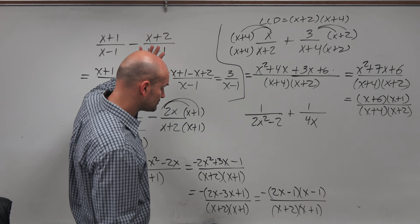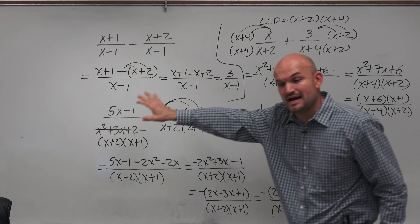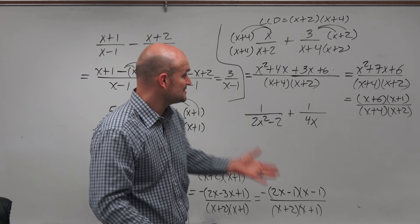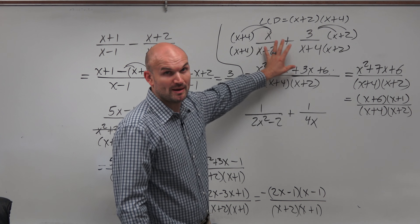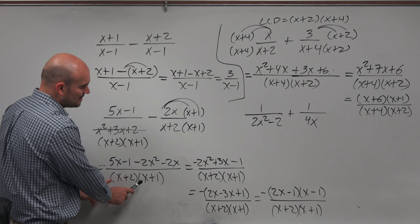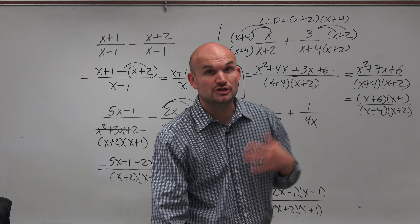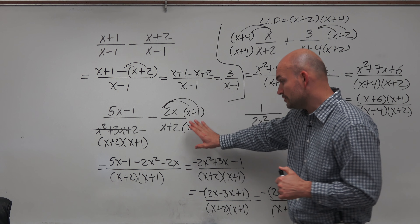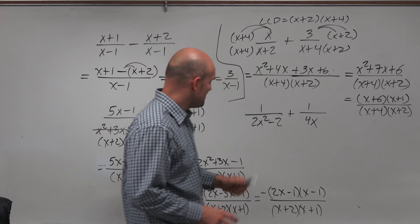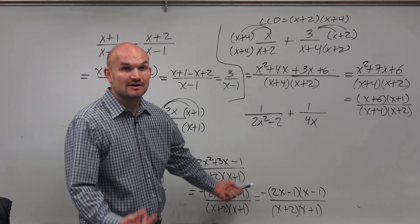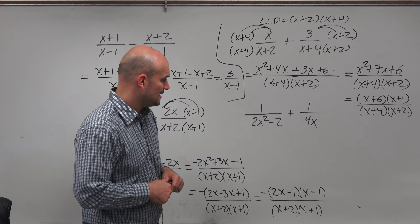Let's review the steps. First, find common denominators. If they don't share one, obtain the LCD by either multiplying the denominators or identifying common factors. Once you have the common denominator, apply the operation to the numerator. Then simplify and look to factor both numerator and denominator to see if anything can be cancelled out.